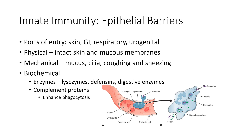Our first barrier in the innate immune system are the epithelial barriers. These are found at ports of entry such as the skin, the gastrointestinal tract, our respiratory tract, and the urogenital tract. Epithelial barriers provide a physical barrier, and this is present when our skin and mucous membranes are intact. Disruption of skin or mucous membranes disrupts that epithelial barrier, allowing pathogens through.